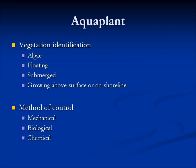On vegetation identification: we have algae, which is basically a floating plant. We have several different varieties of submerged aquatic vegetation. And then we have those that grow above the surface or along the shoreline, such as cattails and bulrushes. The methods of control are mechanical, biological, and chemical — with chemical being the last resort.